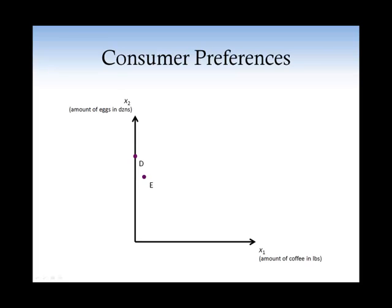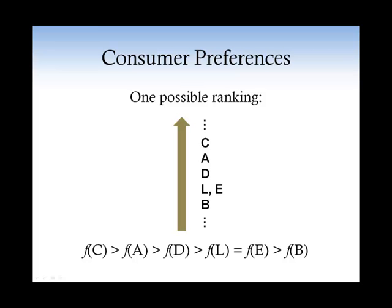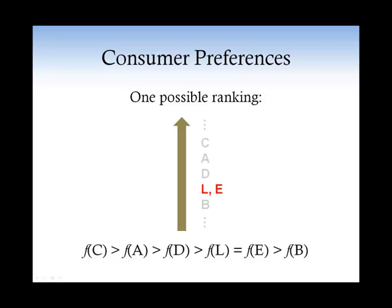Having a ranking is pretty much like having a function that represents this ranking. For example, C is ranked higher than A — meaning Mary likes basket C better than basket A — and the function calculated at C, F of C, has a value that is higher than F of A. Also, the two baskets L and E have the same ranking; Mary is indifferent between them, and F of L has the same value as F of E.